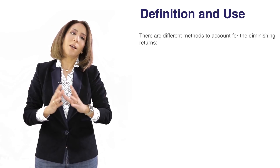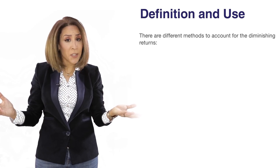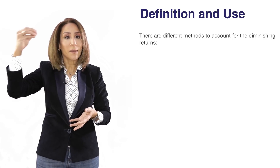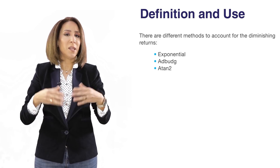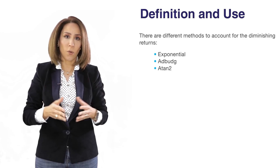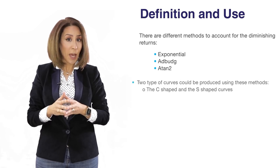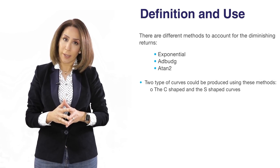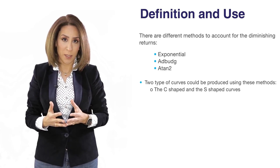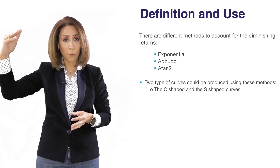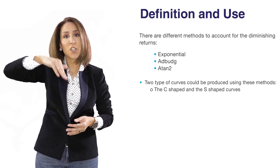There are different methods to account for diminishing returns, and different mathematical transformations that allow us to produce this shape — for example, the exponential function, the atan, the adstock function, etc. However, what I would like to highlight is that there are two types of diminishing return curves you can create: the C-shaped curve, which is concave all the way through, and the S-shaped curve. These two functions have different characteristics, yield different results, and lead to different recommendations. So I advise you to have a discussion with your client, whether internally or externally, to understand what type of insight they are after.